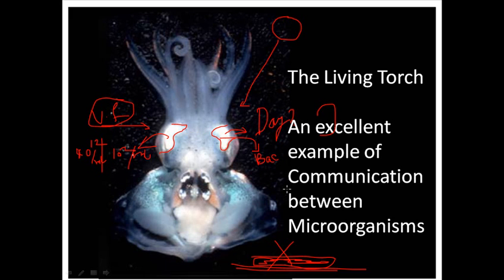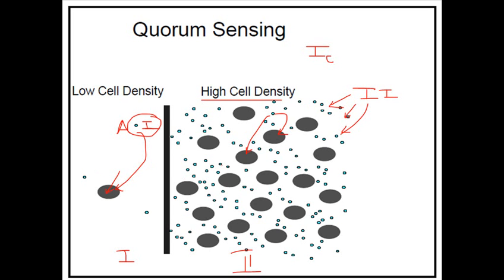During the daytime, the remaining few bacterial cells start to grow and divide again, building the concentration back up until it is large enough to produce the glowing effect via auto-inducers. This is a totally auto-inducing system throughout the whole process. This is the basic mechanism behind quorum sensing.